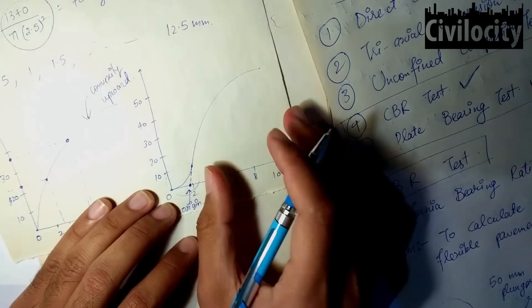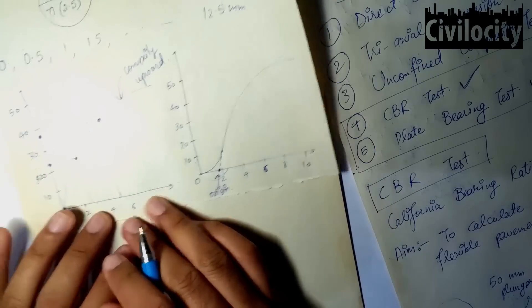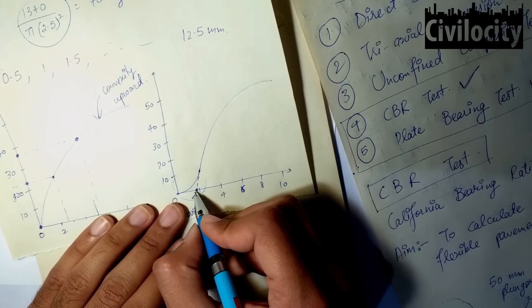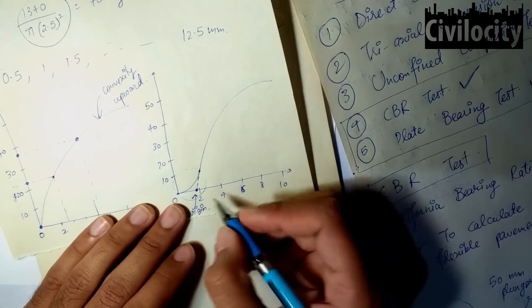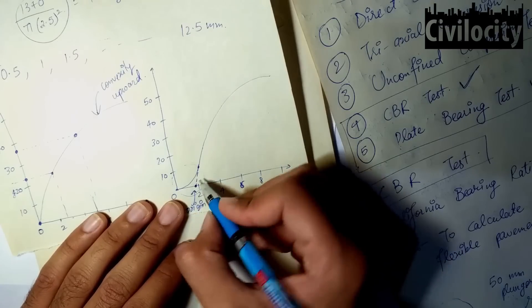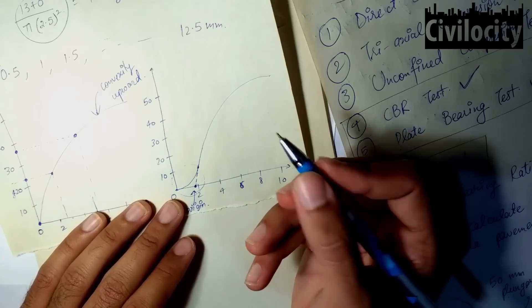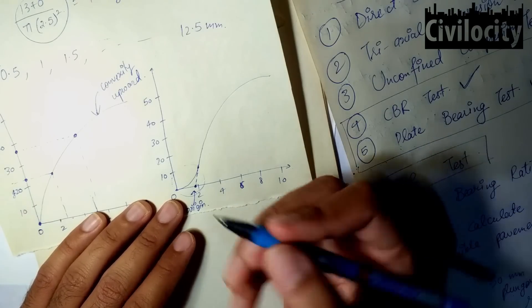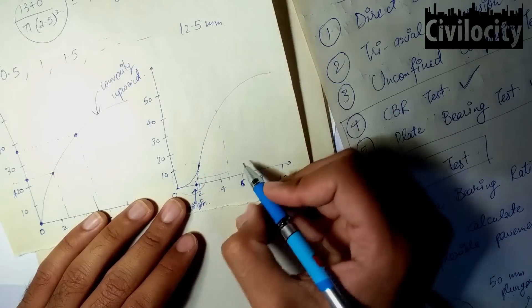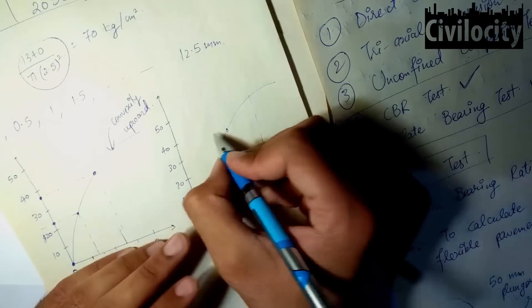For the first curve type, the origin was at zero. For the corrected curve, the origin is shifted to just before the second division. From this corrected origin, you add 2.5 mm to find the 2.5 mm penetration value and add 5 mm for the 5 mm penetration value on the x-axis.